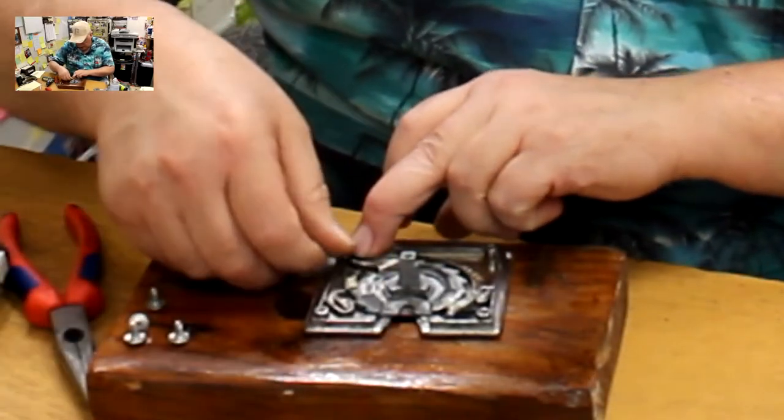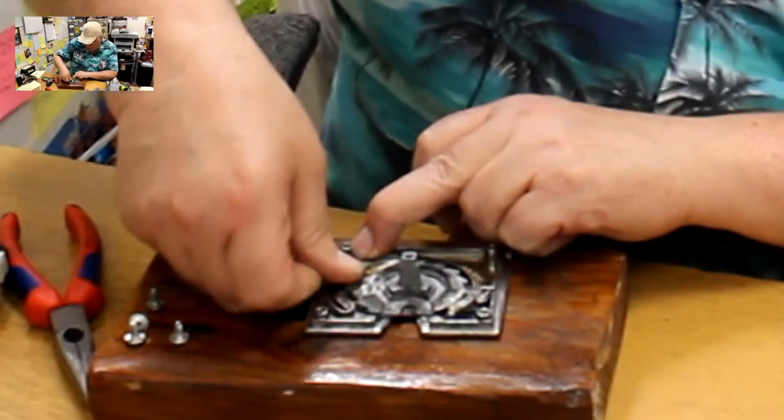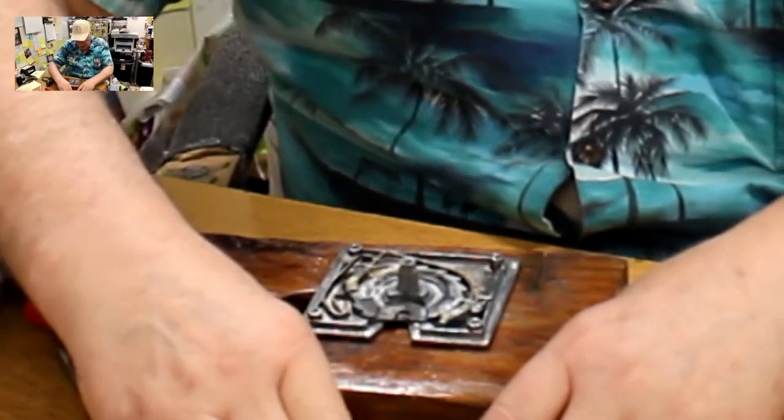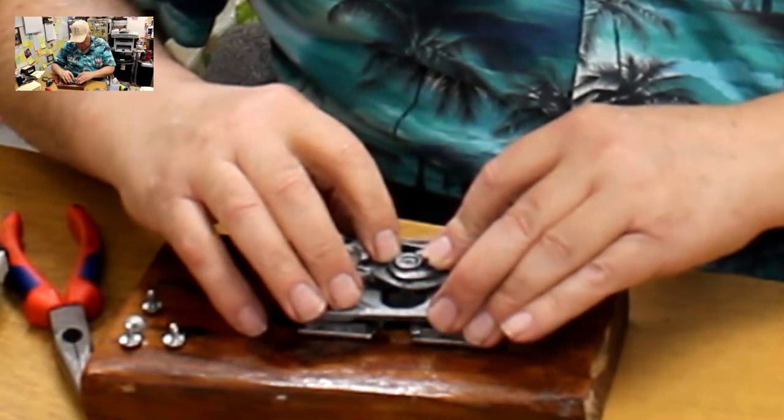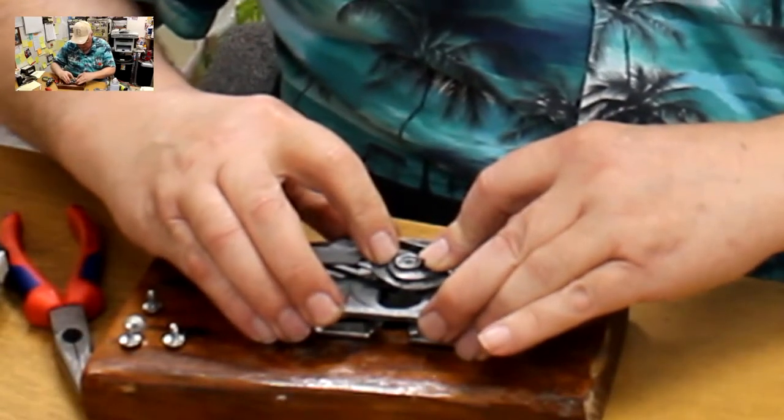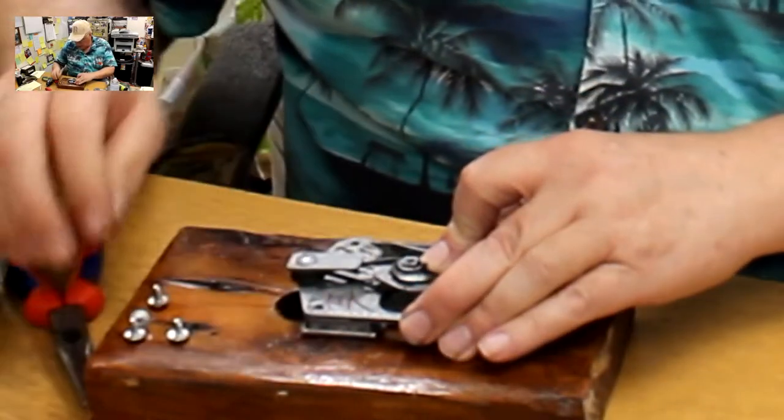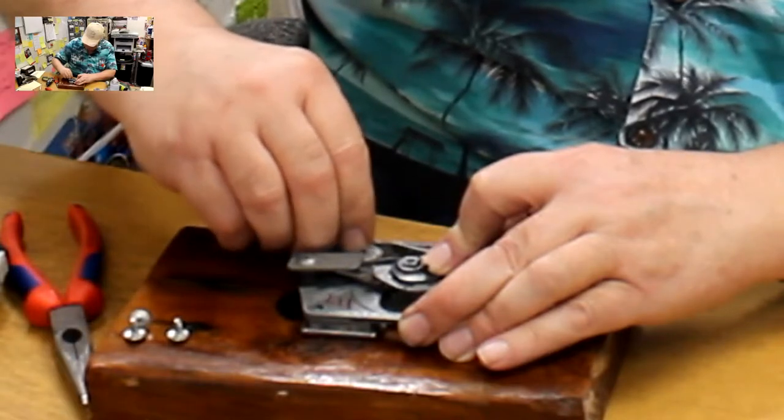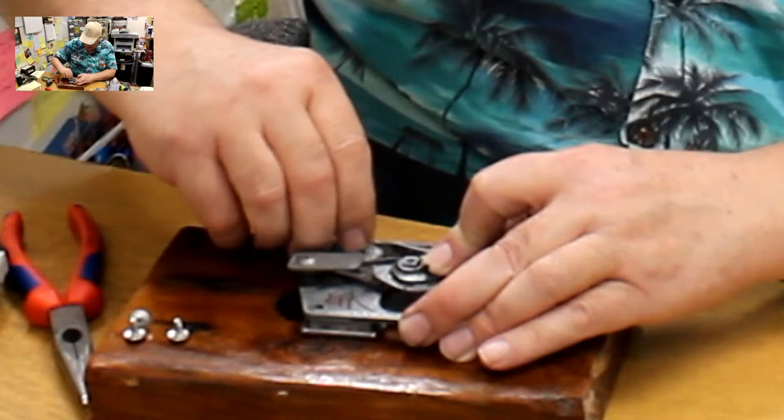This is going to have some tension on it like that. Alright, then we're just going to put the back plate right back on, line up the holes just like that, and put the four screws back in the corners.